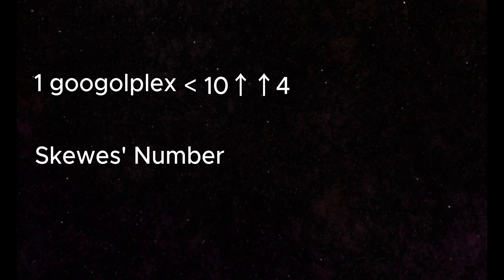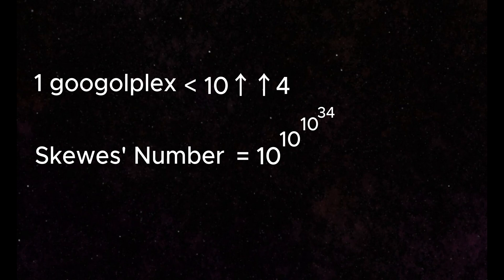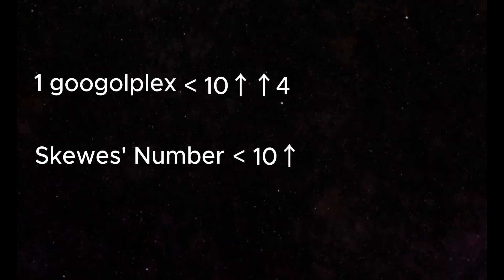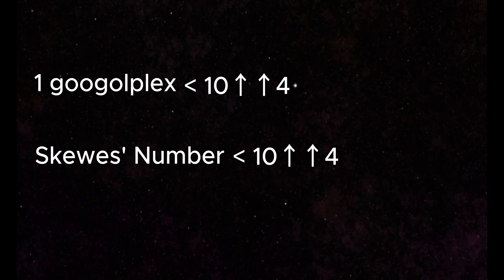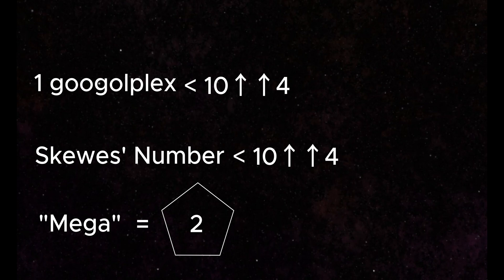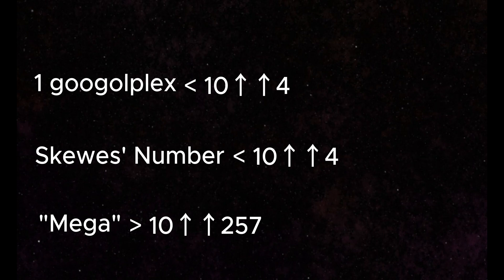Skewes' number, although much larger than Googolplex, is still a stack of tens that is not quite four high. So how big is the number Mega as defined by Steinhaus and Moser? This number is a tad larger than a stack of tens that is 257 exponents high. That's big. But we will need a few more tools before we tackle Moser's number.